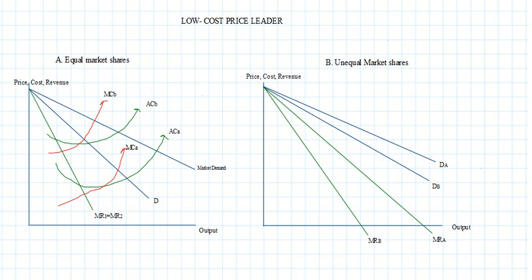In order to understand the price and equilibrium output, we need to note the point where MC is intersecting MR, draw a line upwards till the demand curve, and also drop it perpendicular downwards to the X axis. Wherever this red line which has started from the point of intersection intersects the demand curve, that will give us the price line.